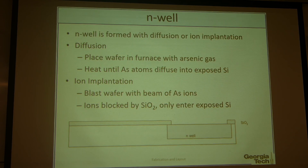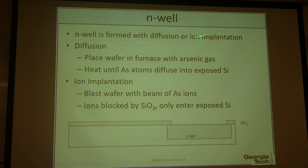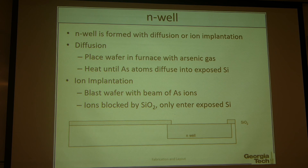Then we make an N-well junction using either diffusion or ion implantation. Diffusion equipment is generally cheaper than ion implantation equipment, but the controllability is much worse. Since most research institutes or universities deal with very large scale — like micrometer scale — they tend to have diffusion tools rather than ion implantation. But industry needs ion implantation to make finer features.